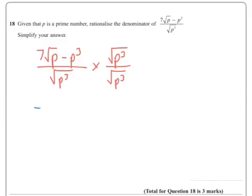So we've got 7 root P to the power 4 minus P. Is it P cubed? Is it P squared? I can't remember. Oh, it's P squared. I do apologize. So that should be P squared. P squared root P cubed. All over P cubed.